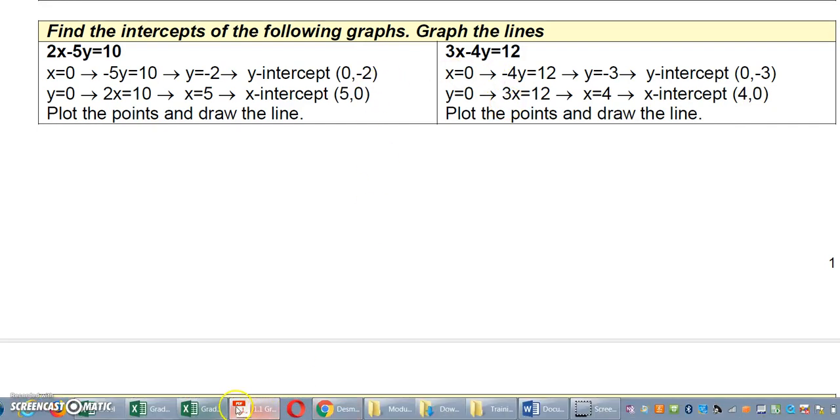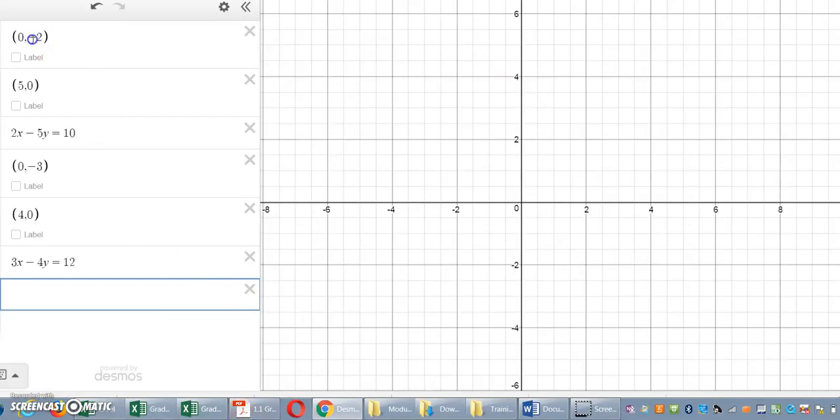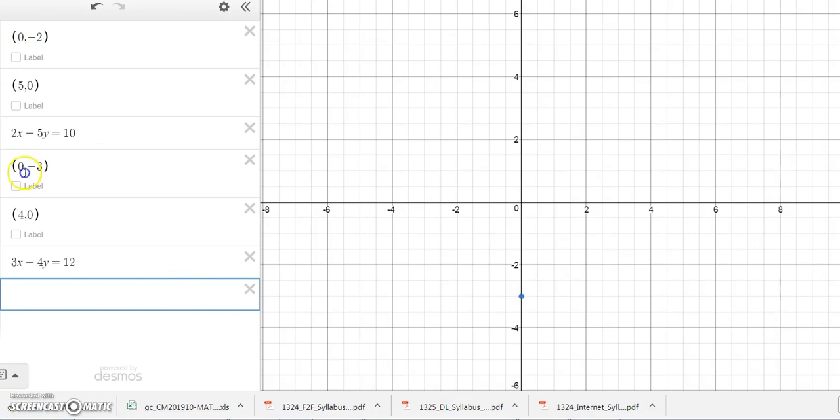So to graph that all I have to do is plot the point (0, -3) which would be right here and then plot the point (4, 0) which is right here and then draw the line through the two points with a ruler, use a ruler or an index card or something for a straight edge, but draw the line through there and that's the graph of the line 3x minus 4y equal 12.